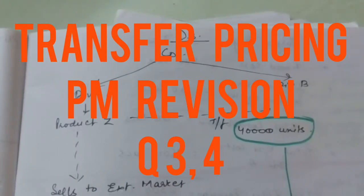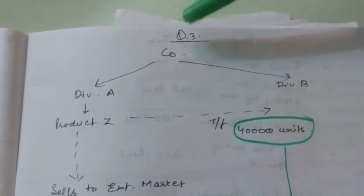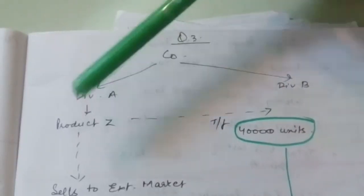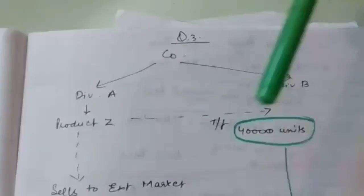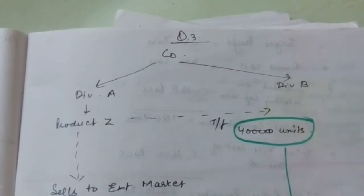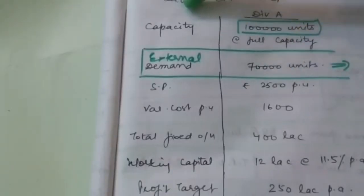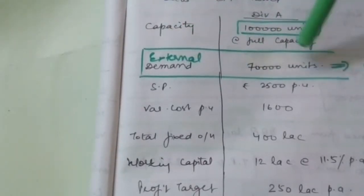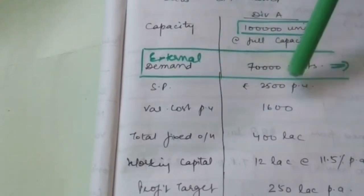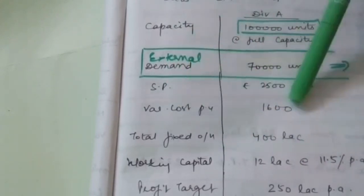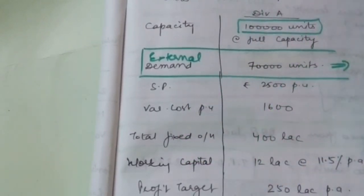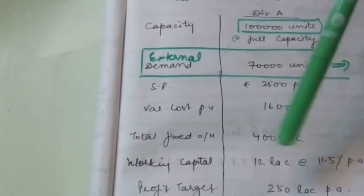Hey guys, I am back with another lecture on transfer pricing. I am going to start with question number 3. There is a company whose two divisions are Division A and Division B. Product Z, which is made in Division A, is also transferred to Division B. The capacity of Division A is 1 lakh units, external demand is 70,000 units, selling price is $2,500 per unit. Fixed overhead is given and working capital is $12 lakh at the rate of 11.5% per annum, so we will compute interest. Profit target is $250 lakh per annum.